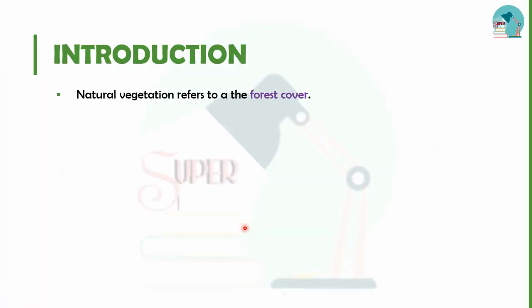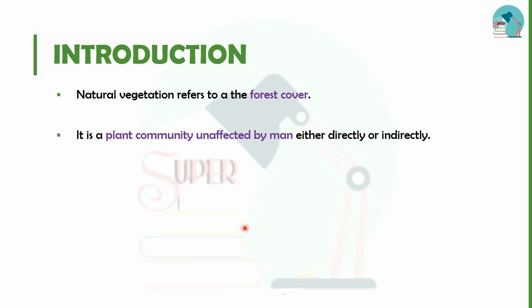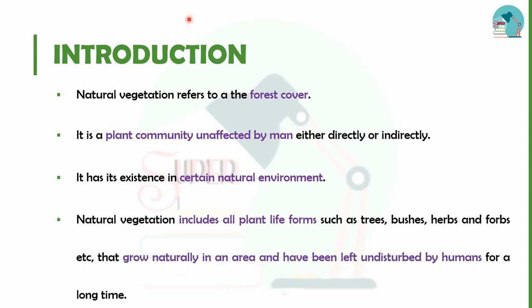First, let's talk about the introduction. Forest is called Natural Vegetation — if you refer to natural vegetation, you refer to the forest. Forest is called a plant community, with direct or indirect effects in a plant community. It is called a natural area in certain places, and it includes trees, bushes, herbs, and forbs.